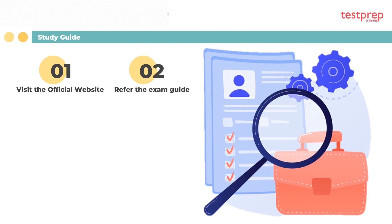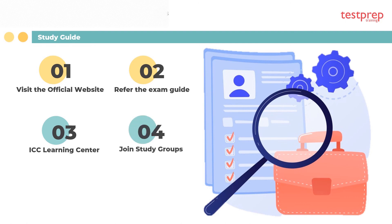Three, ICC Learning Center — the candidate can also go to the ICC Learning Center. The ICC Learning Center offers training programs on every exam and provides programs for a particular exam that contain all information such as description, intended audience, delivery method, duration, etc. Four, join a study group — joining a study group or an online community will also be useful for the candidate. It will help them do more hard work, and studying in a group will help them stay connected with others on the same pathway.